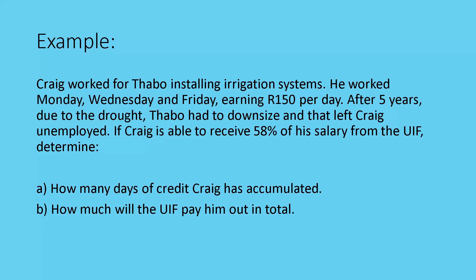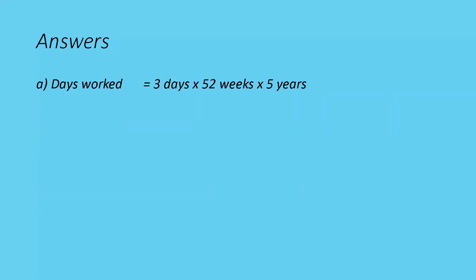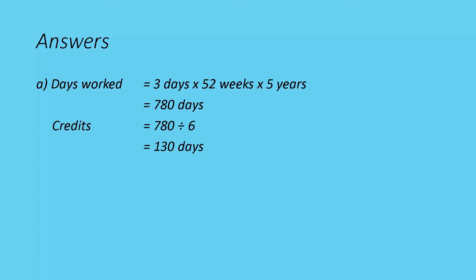First, let's look at the number of days. He worked three days a week, 52 weeks a year, for five years — that gives 780 days worked. Taking 780 divided by six gives 130 days' worth of credit that he can claim.